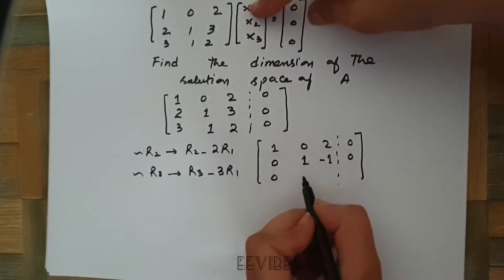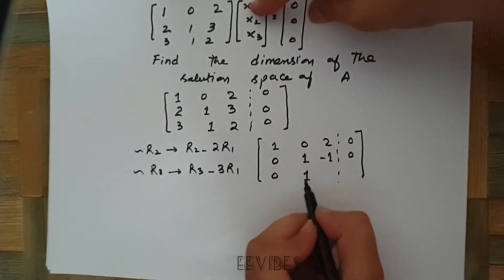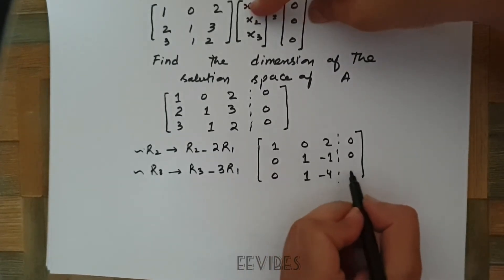Similarly, this entry will be 0, it will be 1, and 2 minus 6 is equal to minus 4.